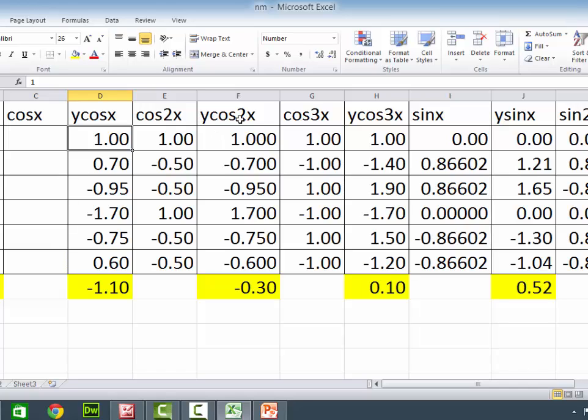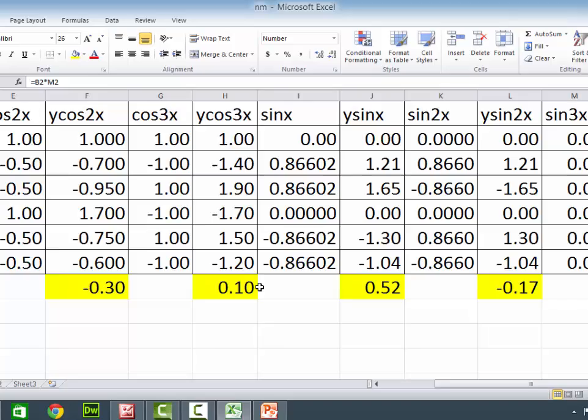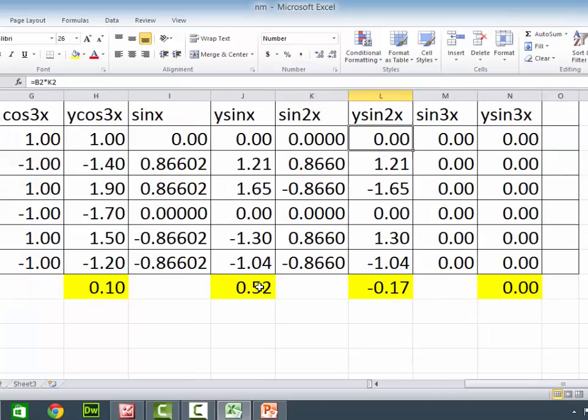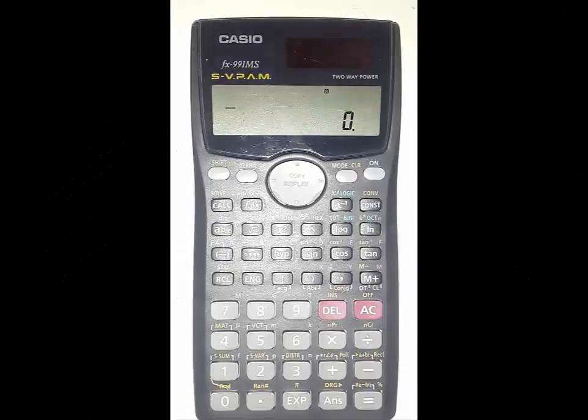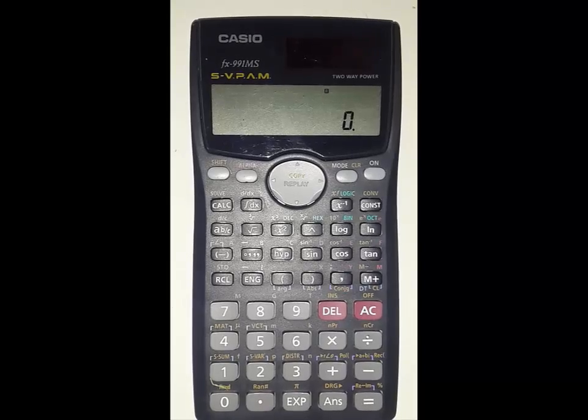As well as Y cos 2x can be easily found out using the calculator. Just substitute Y value and X value. See here the values are given. This is the summation. Add all these things. This will give the summation of Y cos x. This will give the values of summation of Y cos 2x and so on. I have made this in the Excel sheet.